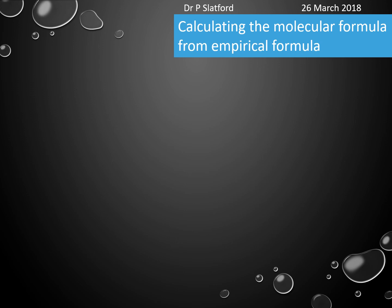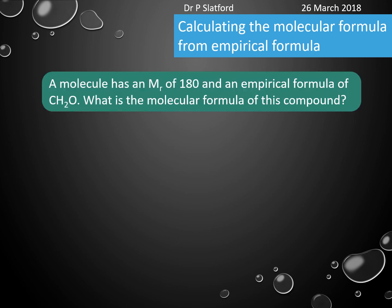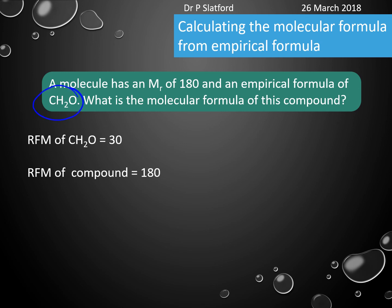Finally, one of the things you might be asked to do is work out the molecular formula from a given empirical formula. Let's say a molecule has a relative molecular mass of 180 and an empirical formula of CH2O — what is the molecular formula? We write down the empirical formula and work out its relative formula mass.